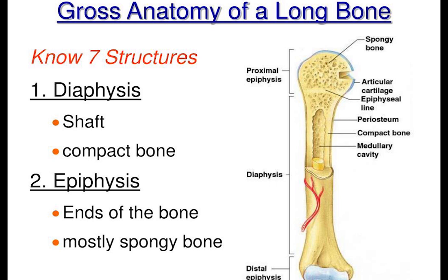Bone is actively constructed and remodelled throughout life by special bone cells known as osteoblasts and osteoclasts. Within any single bone, the tissue is woven into two main patterns, known as cortical and cancellous bone, each with a different appearance and characteristics.